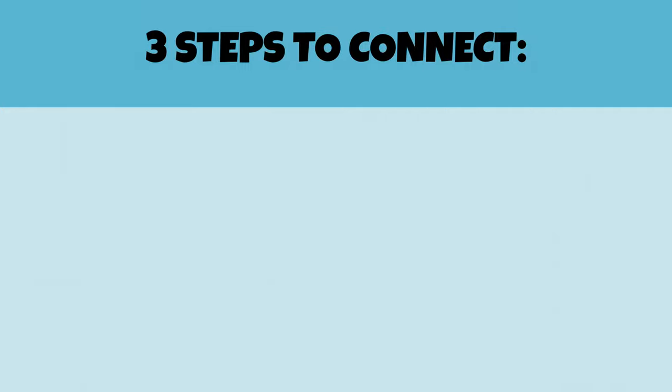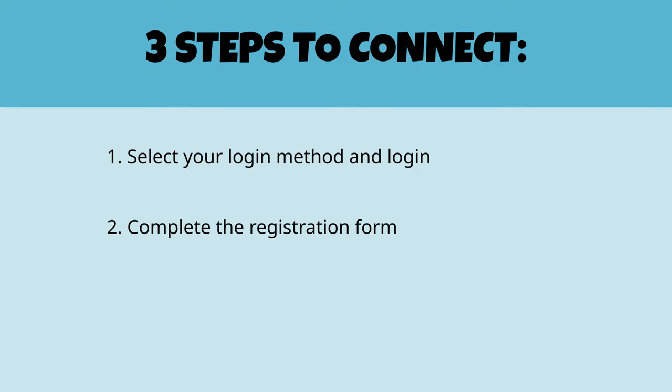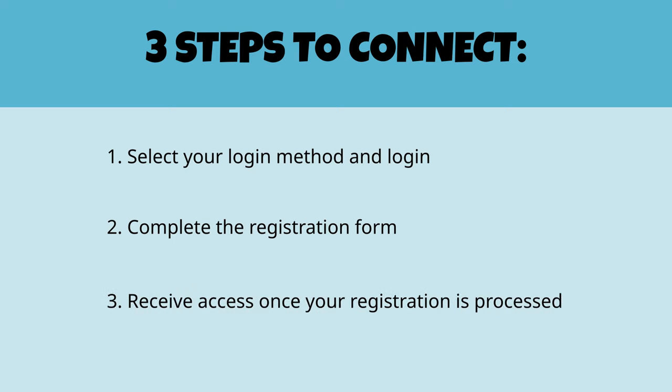There are three steps to connect to Sage Online. First, select your login method and log in. Second, complete the registration form. Third, receive access once your registration is processed.